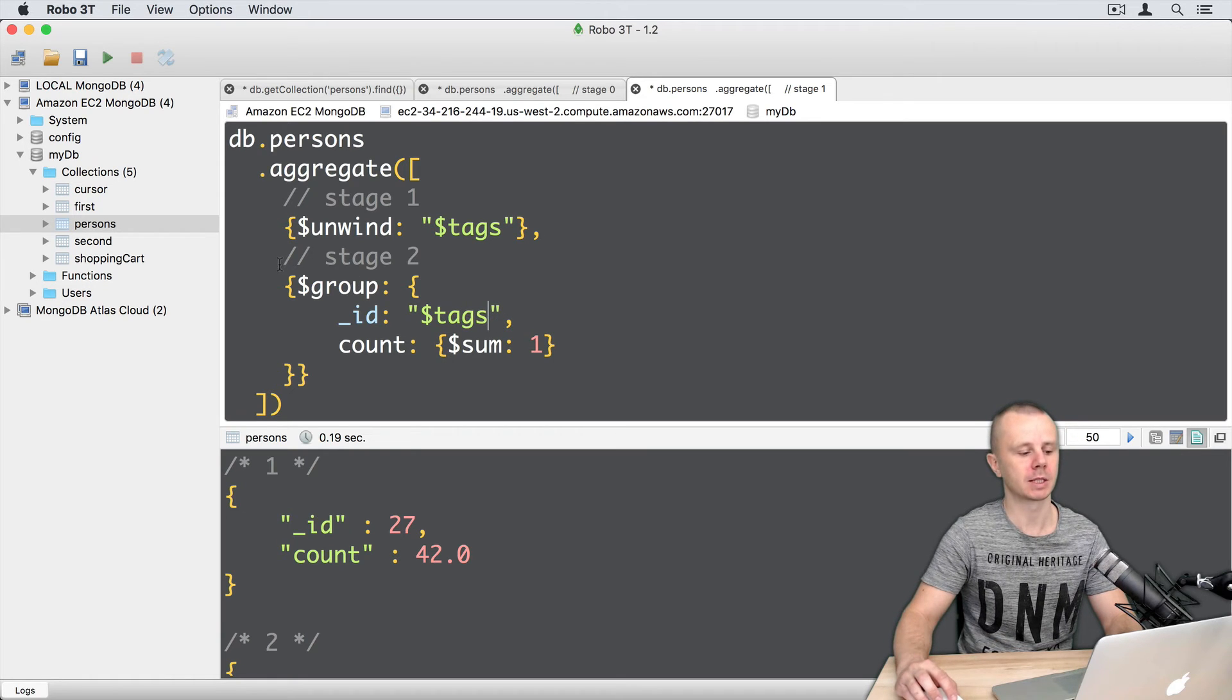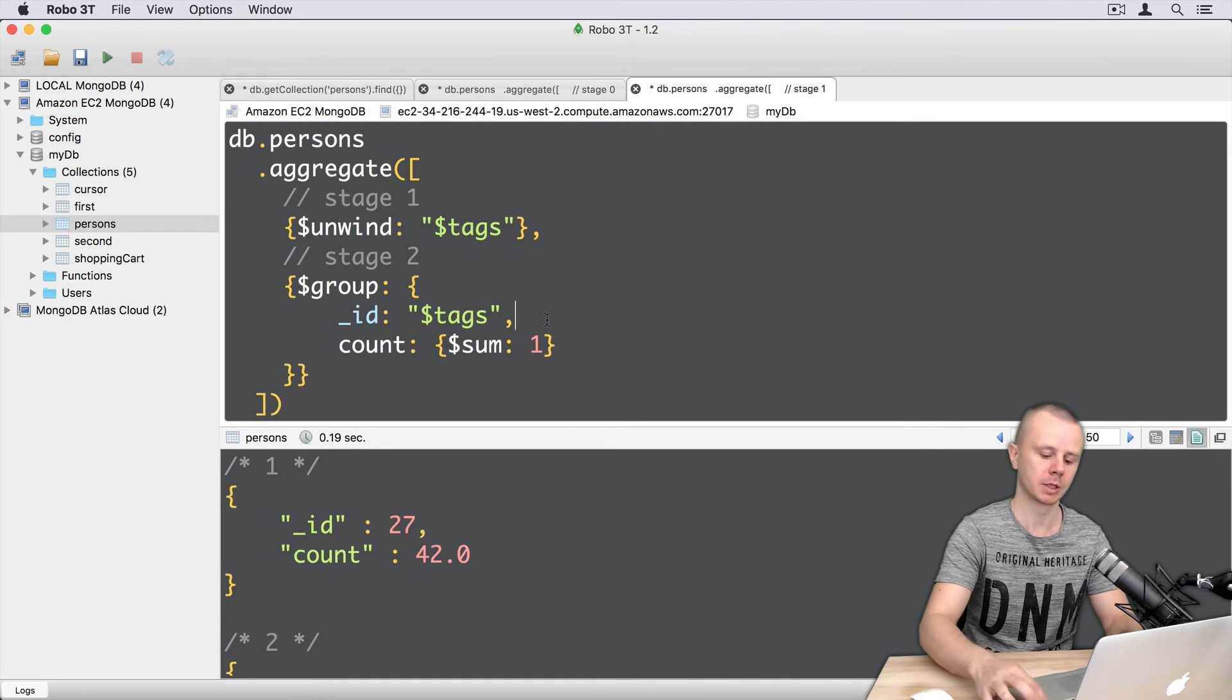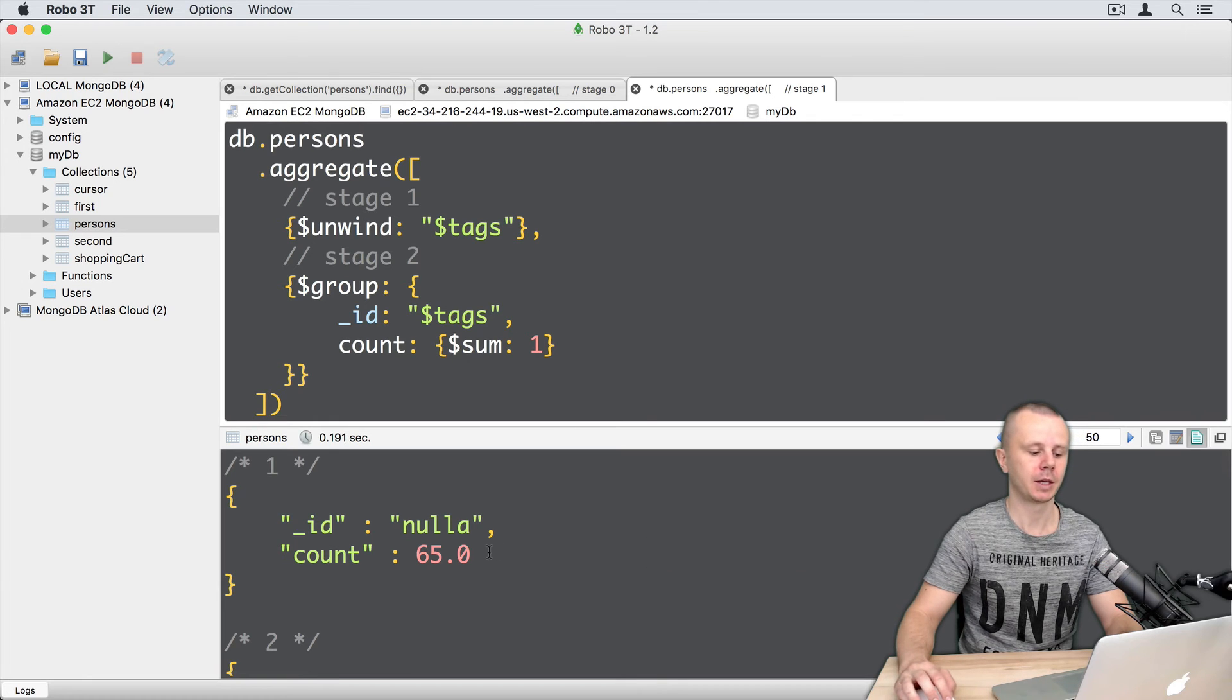But on the second stage this tags field will contain not arrays, it will contain strings. Let's execute this command. And here are the results. So for each tag we got the number of occurrences.